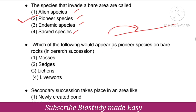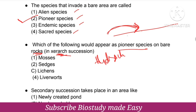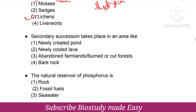Which of the following would appear as pioneer species in rocks? That is Xerarch succession — on land it is Xerarch, in water it is Hydrarch succession. The answer is lichens. Lichens are the pioneer species in rocks.